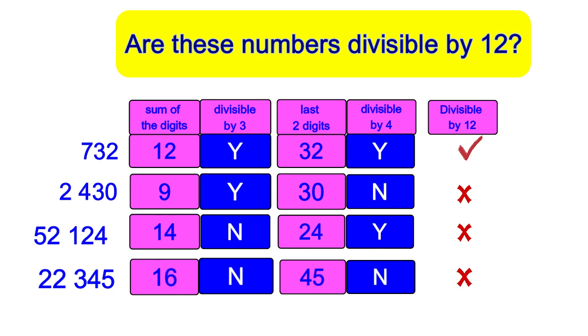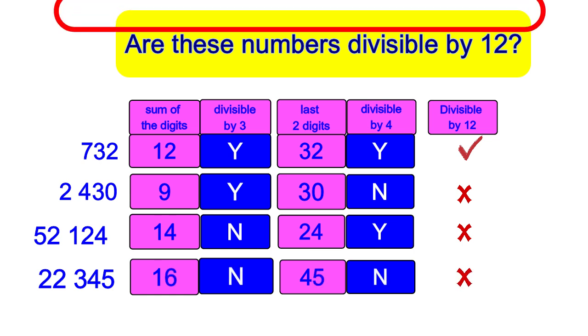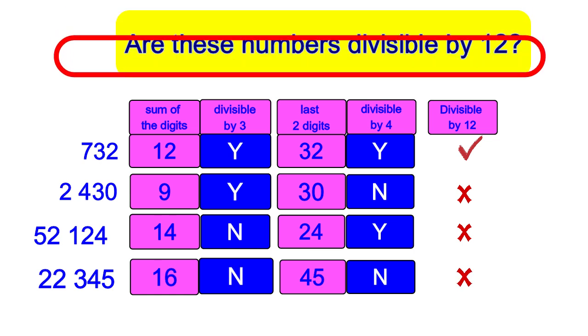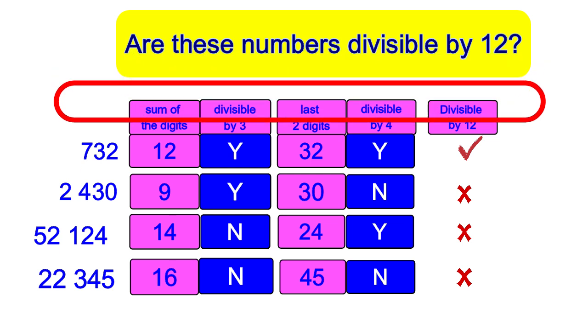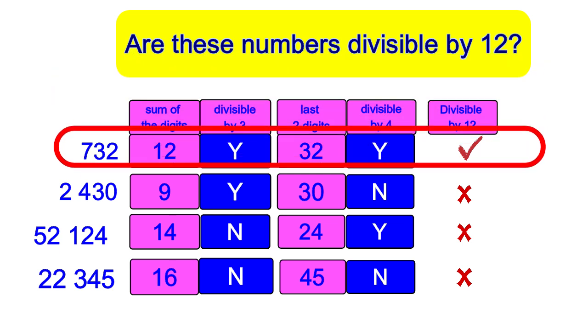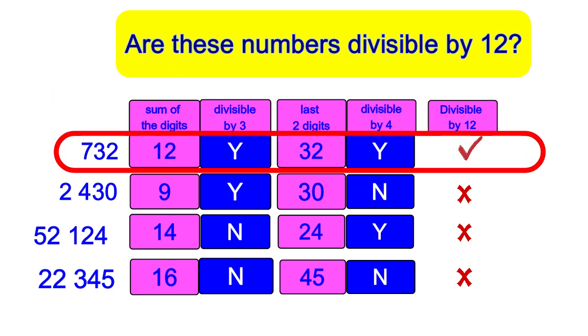In our examples, the number that is divisible by 12 is the one that has met the two conditions.